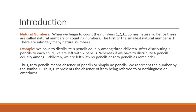Now let's take an example. Say if I have to distribute eight pencils equally among three children, then I will distribute two pencils to each child and two pencils would be left with me. Now suppose if I have to distribute only six pencils equally among three children, then when I distribute two pencils to each child, I would be left with no pencil — I would say I have zero pencils with me. So to show this nothingness, zero is being introduced.